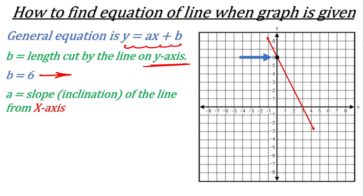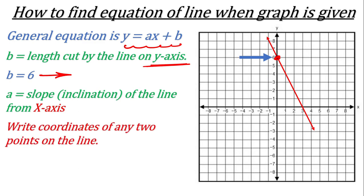The coordinate of this first point is very easy to write. Since it is lying on the y-axis, the value of x will be 0, so the coordinate is (0, 6). Now we will take one more point. Try to find a point which is on the corner of a grid box — for example this point, or this one. Try to avoid points in the middle of a box because we cannot be sure of their coordinates.